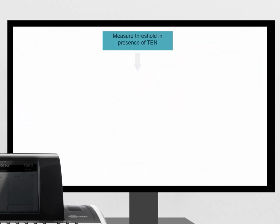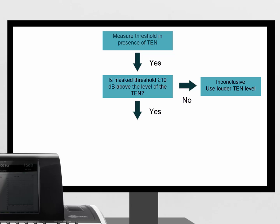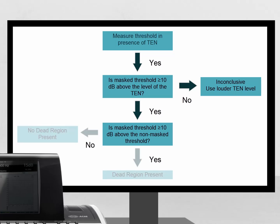There are two criteria, and both of these need to be achieved before a dead region can be identified. Firstly, the masked threshold should be at least 10 dB above the level of the TEN. And secondly, the masked threshold must be 10 dB above the non-masked threshold.